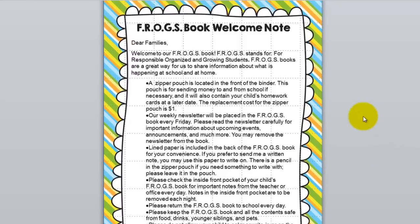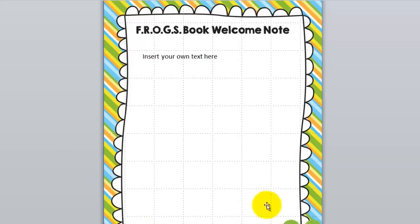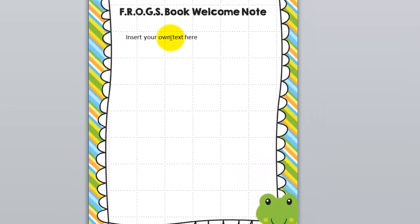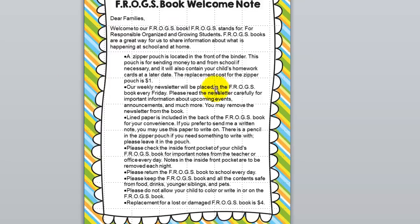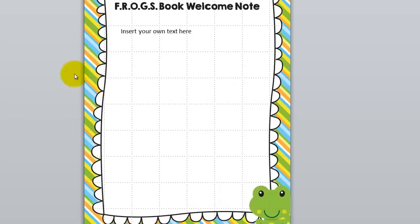Here in the frog binder, after the cover page, you will find an example welcome note. If you'd like to see what I put in the first page of my binder to let parents know how it works, you can see that. On the next page there's one for yourself, so you can take the text I created and make it work for you, because some of this information might not be specific to your program. You can type your own text to create your own welcome note.